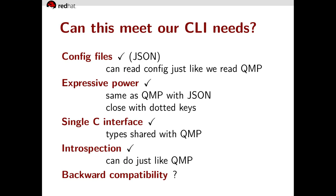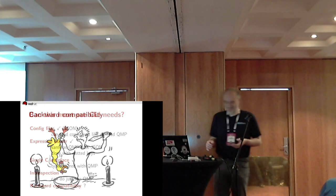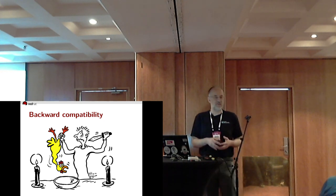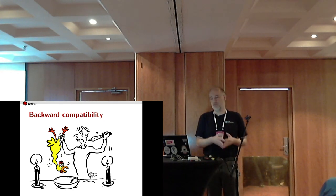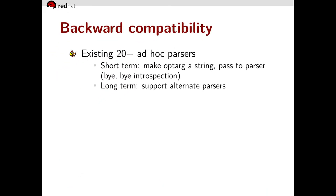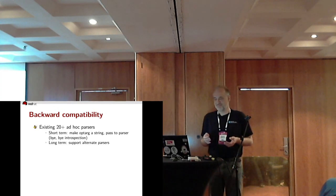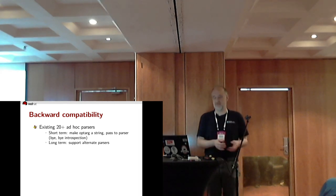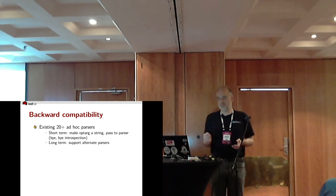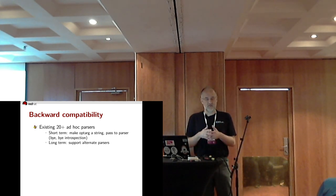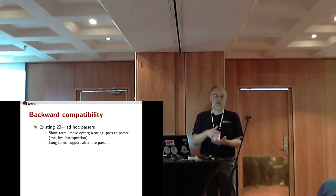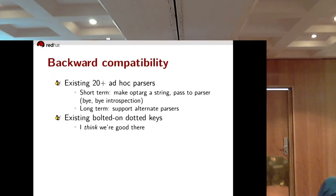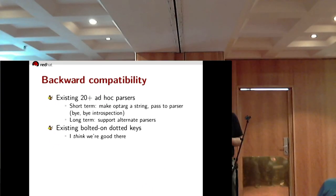Backward compatibility — hmm. QAPI taking over avoids or addresses a whole number of issues, but it can't avoid all our backward compatibility issues. We want to stay compatible with more than 20 ad hoc parsers. In the short term we can make the option argument a string in the QAPI schema and pass that string to the existing parser — that defeats introspection, but we're no worse than before. In the longer term we want a proper QAPI schema, and we'll need a way to say in the schema: use this custom parser over there instead of the normal one. We want to stay compatible to the existing bolted-on dotted keys — I think we are good there.